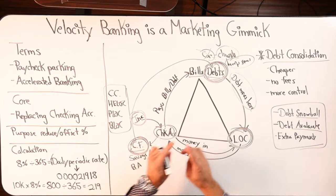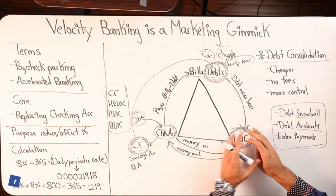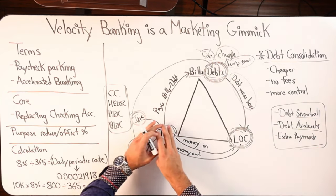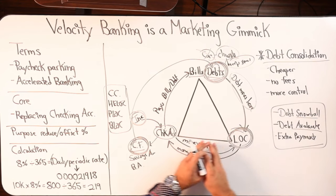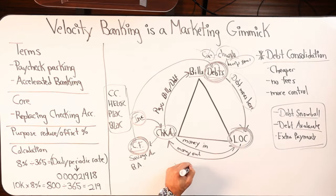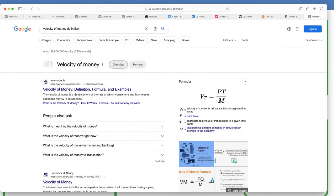Instead of waiting until the end of the month to make an extra payment, you're immediately paying the car debt off faster. All your income now pays down the line of credit — money came out and paid off the car, income came in and moved to the line, then money comes back out to pay remaining bills, creating a cycle. This refers to the velocity of money. Let's look up the definition — the velocity of money is a measurement of the rate at which consumers and businesses exchange money in an economy.